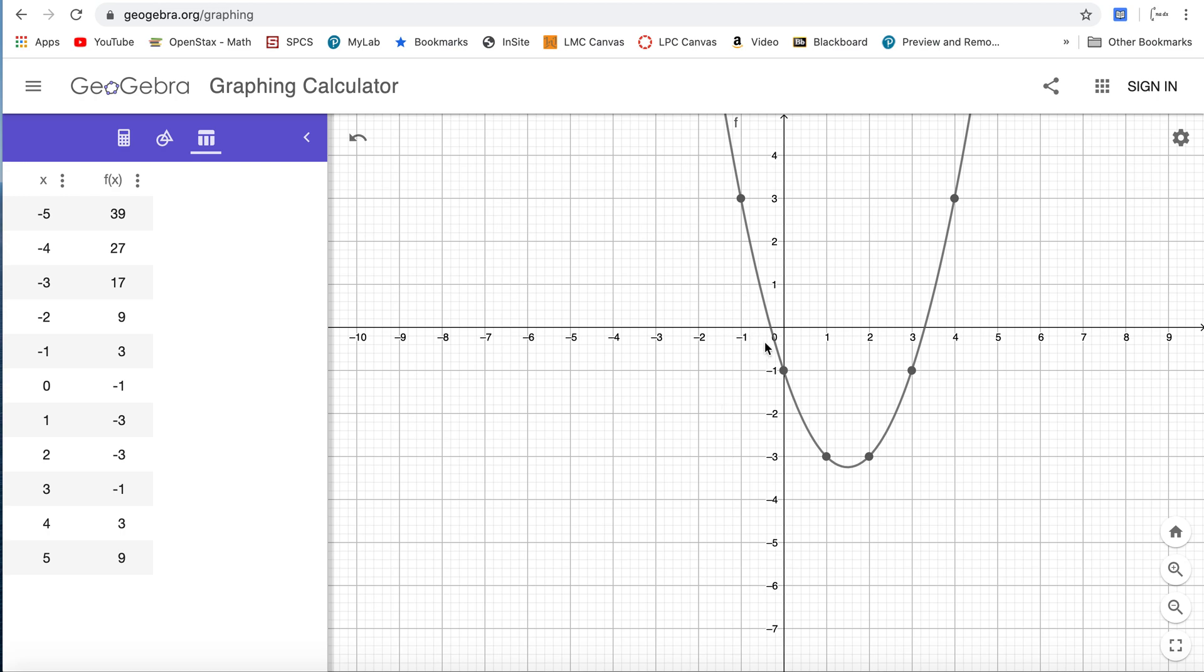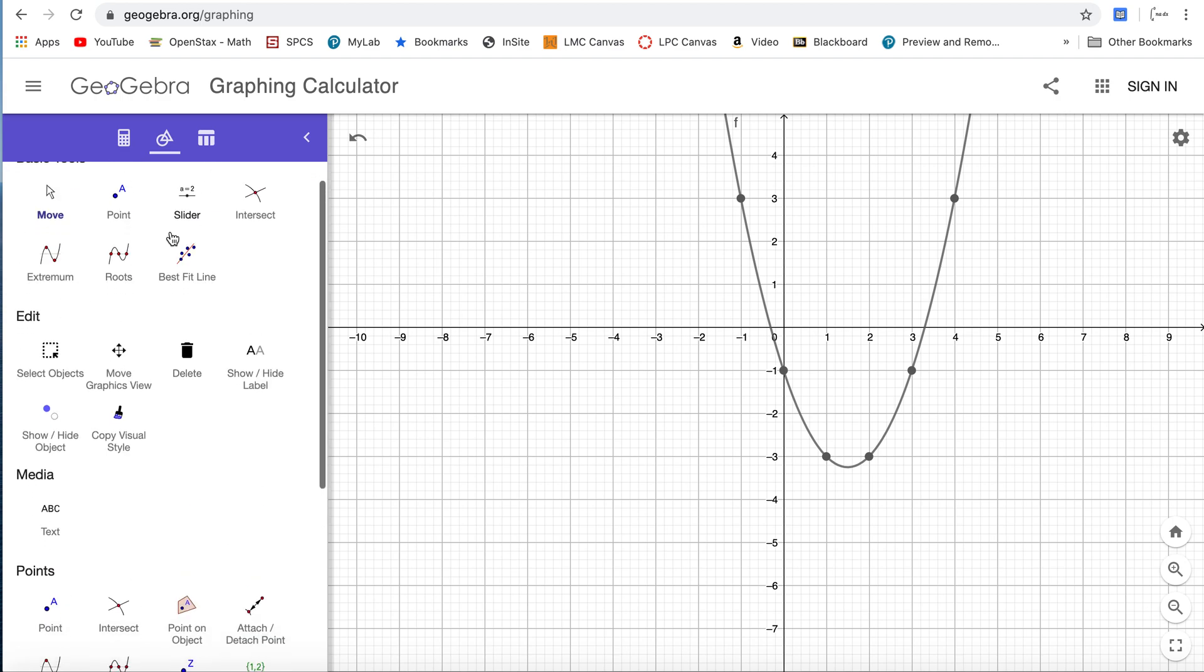If you notice, the ordered pairs created by this table values are here, and I don't see all of them. In order to see more, you have to go to this symbol here.